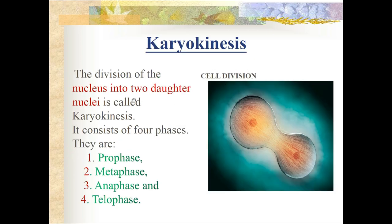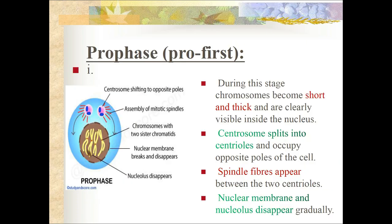Karyokinesis is the division of the nucleus into two daughter nuclei and it consists of four phases: prophase, metaphase, anaphase, and telophase. During prophase - the first phase - the chromosomes become short and thick. The chromatin reticulum condenses to form chromosomes which are clearly visible inside the nucleus.